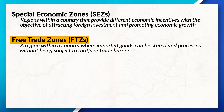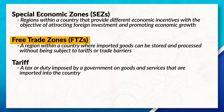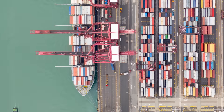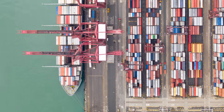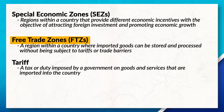Both free trade zones and export processing zones are a form of a special economic zone; however, they each focus on a specific goal. Free trade zones are areas within a country that seek to promote global trade, allowing companies to import and export different products without having to pay tariffs or custom duties. These zones are often centered around a port or infrastructure that allows for the movement of goods in and out of an area.